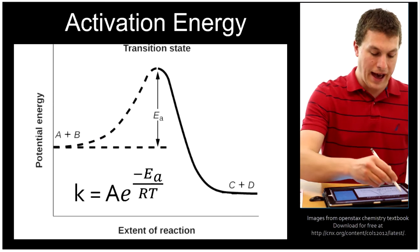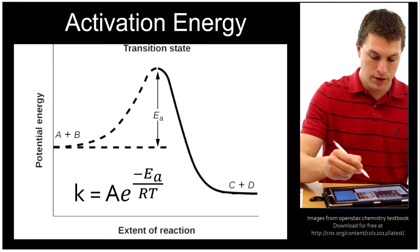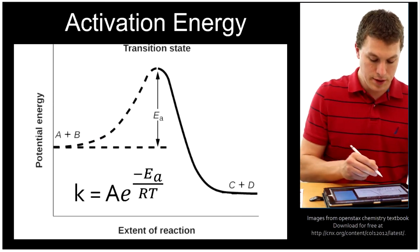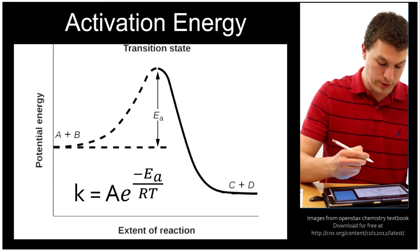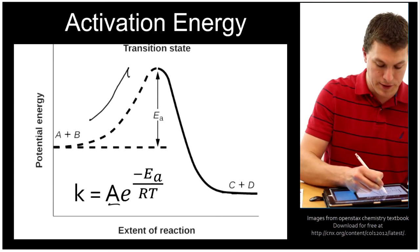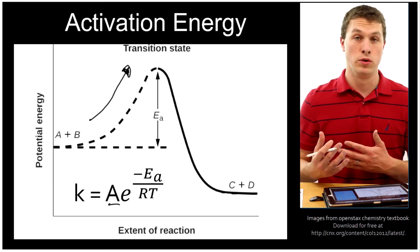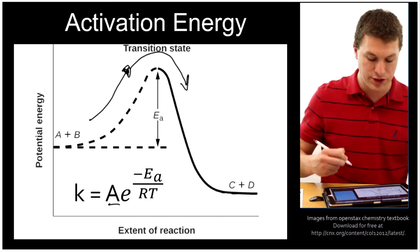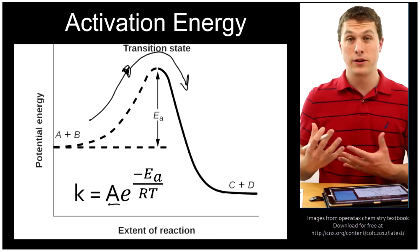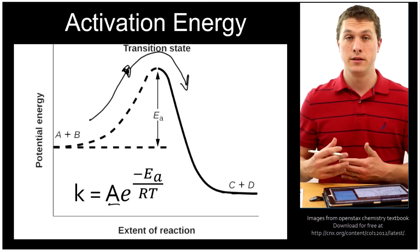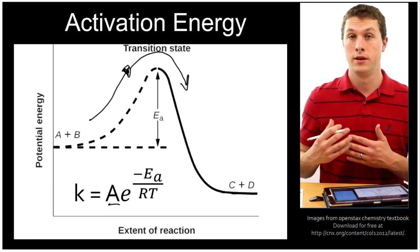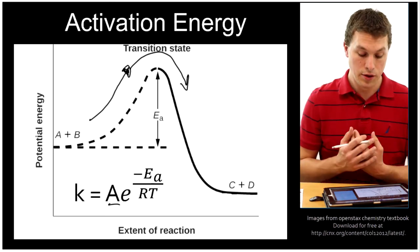So when we think back to our graph, we can picture trying to run the reaction, or the frequency factor, as basically trying to run up this hill. And some fraction of your molecules will have enough energy that when they try to run over, they actually get over the top. So the bigger the frequency factor, the more often they're trying, that means the bigger the k and the faster the rate.